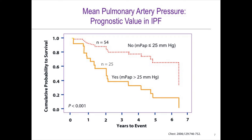The PH of IPF tends to be mild, much like COPD. If you look at all patients with a mean PA pressure greater than 25 mmHg, about 50% of them reside in the range of 25 to 30 — so very mild. And yet when you look at the impact of any PH in patients with IPF, you can see a stark and marked difference in outcomes and survival.